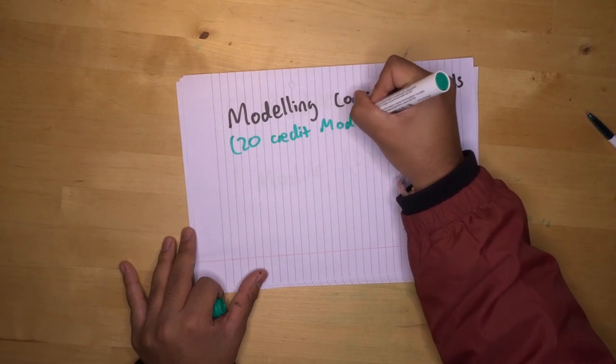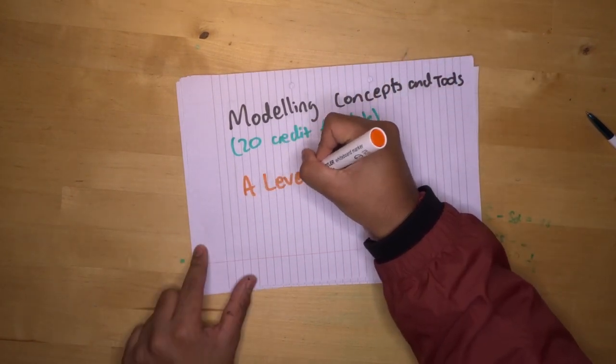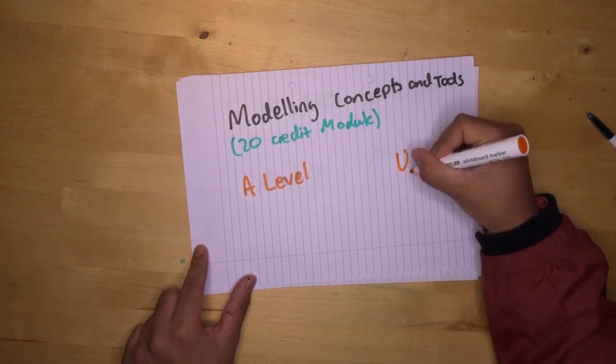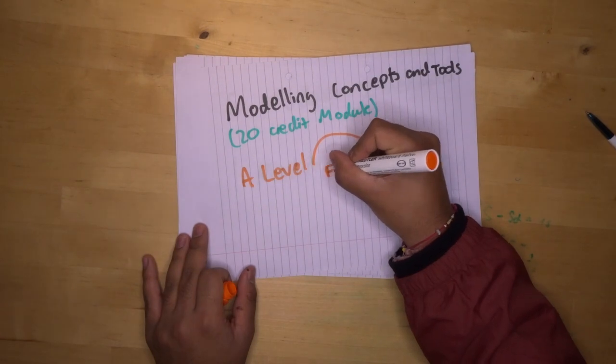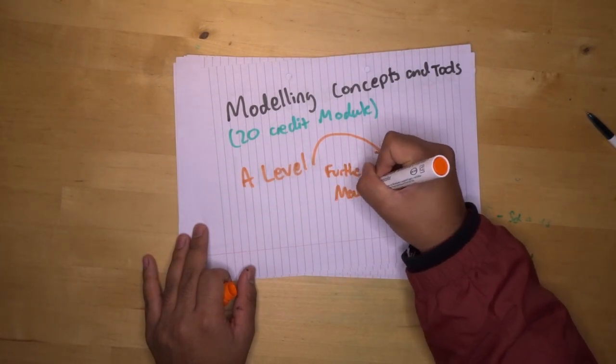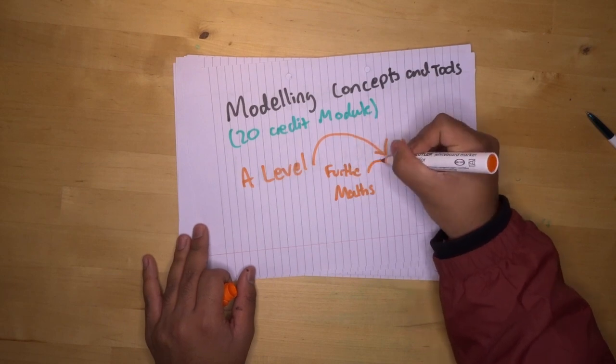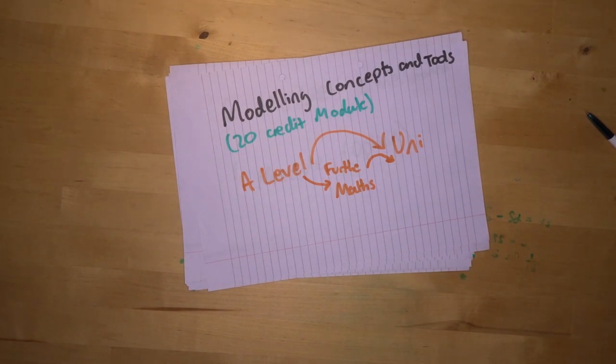Modeling concepts and tools is a 20 credit module. It is designed to fill the gap between A-level maths and the uni maths you will use. One thing I will note about this module is that if you have done further maths, the jump is smaller between uni maths and further maths. So modelling in concepts and tools does a lot of work that has already been done in further maths.